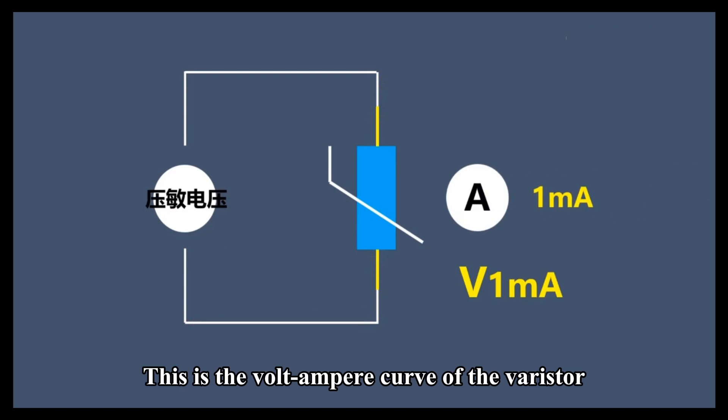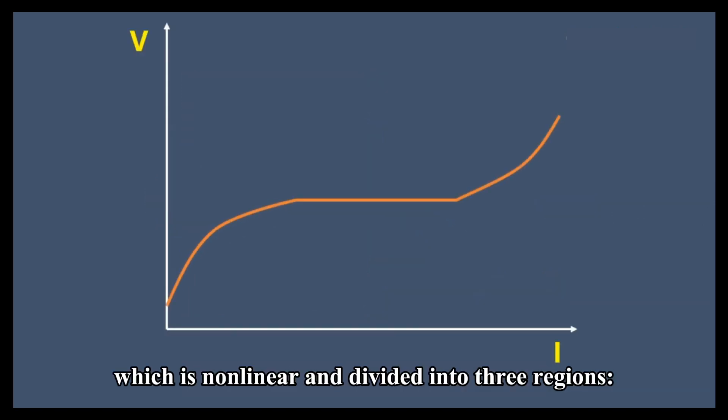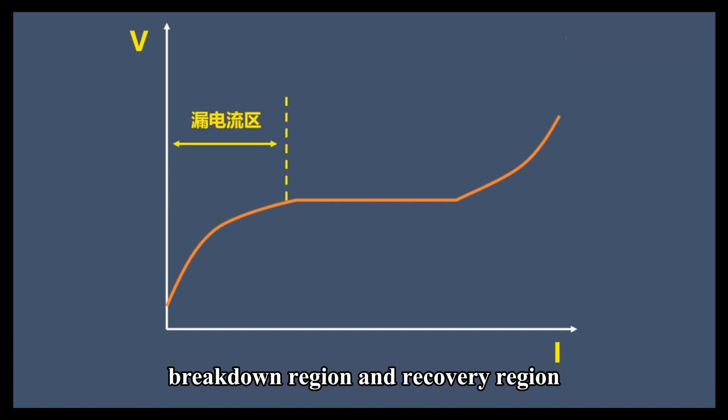This is the volt-ampere curve of the varistor, which is non-linear and divided into three regions: leakage current region, breakdown region, and recovery region.